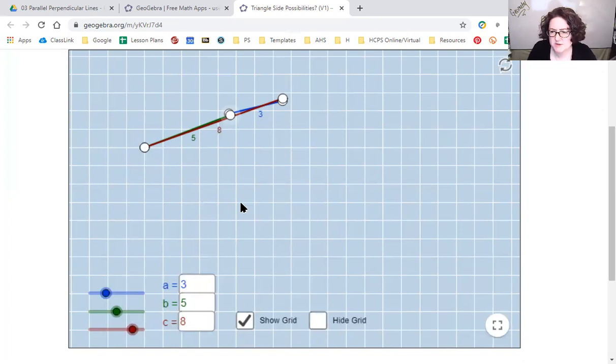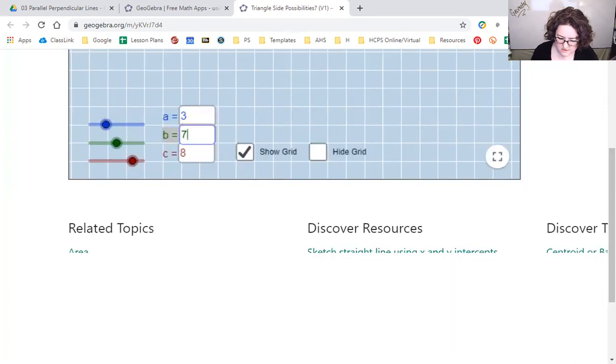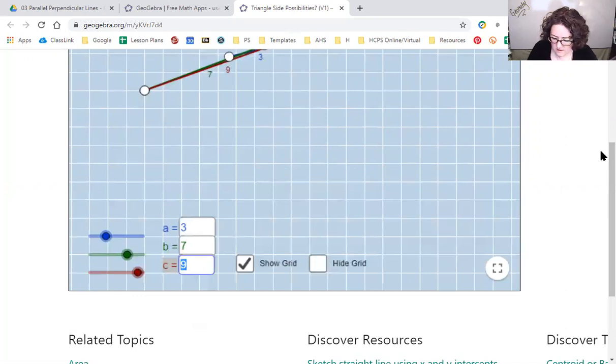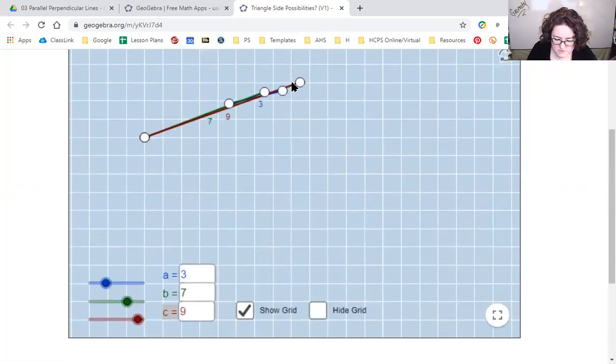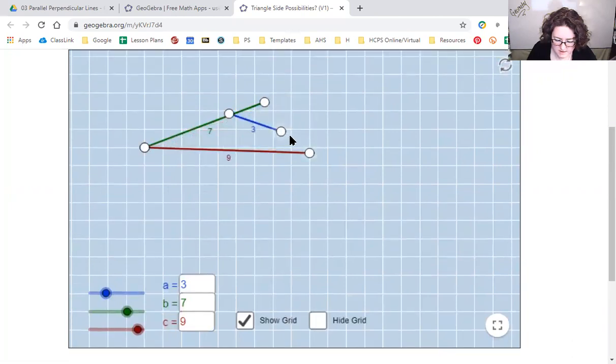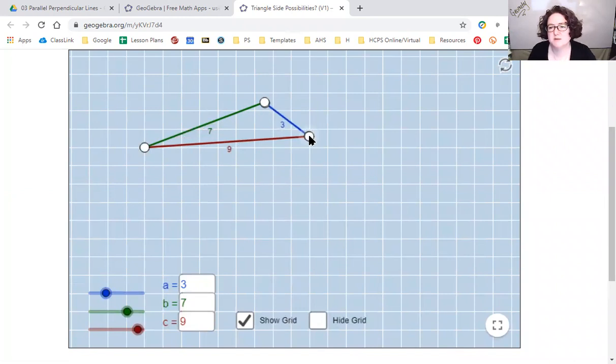Let's try the next one, 3, 7, and 9. Let's change the second one to a 7 and the third one to a 9. So here's our long side 9, here's our short side 3. This one's going to work. We definitely have enough space that we can line our points up so they perfectly overlap. We've got lots of space in between. So 3, 7, and 9 definitely works.